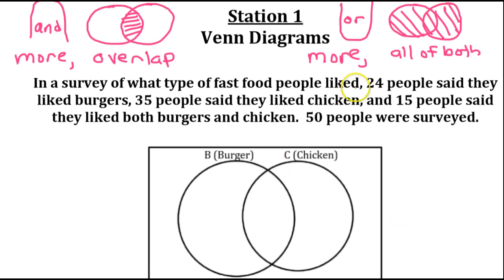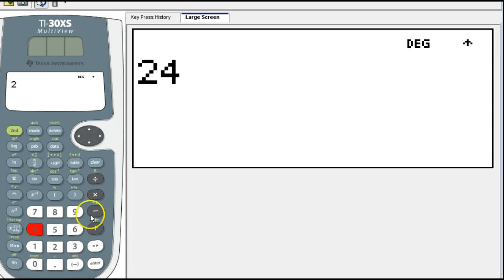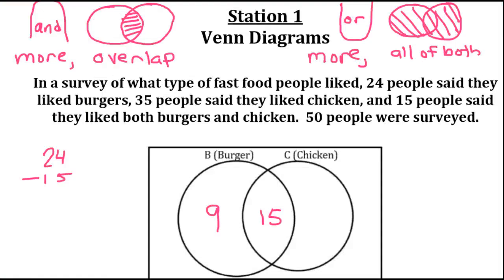So, keep in mind, you should always start with the overlapping part. 15 people who liked burgers and chicken, you should write that number down in the overlapping section first. Now, 24 people like burgers. So, I need a number out here that will help this 15 add up to 24. In other words, what is 24 minus 15? That should be 9. So, that's how you get this number. You take the total number and you subtract the overlapping part.